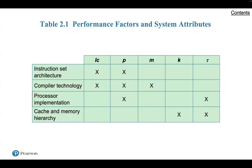Let's talk about performance factors and system attributes. This table shows a matrix where one dimension shows five performance parameters and the other shows four system attributes; an X in a cell indicates that a system attribute affects a performance factor. A common measure of performance is the rate at which instructions are executed, expressed as millions of instructions per second, or MIPS. Another common performance measure deals specifically with floating-point instructions, common in scientific and gaming applications: floating-point performance is expressed in millions of floating-point operations per second, or FLOPS.